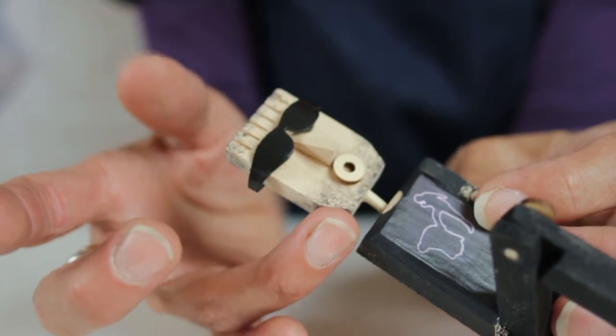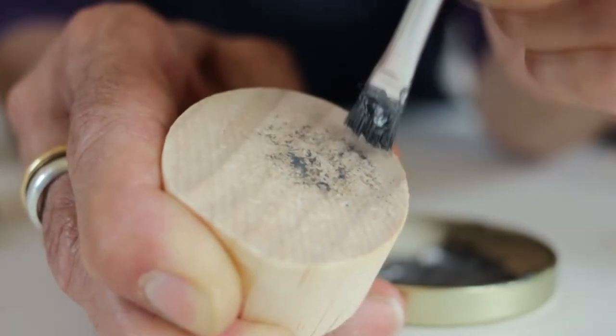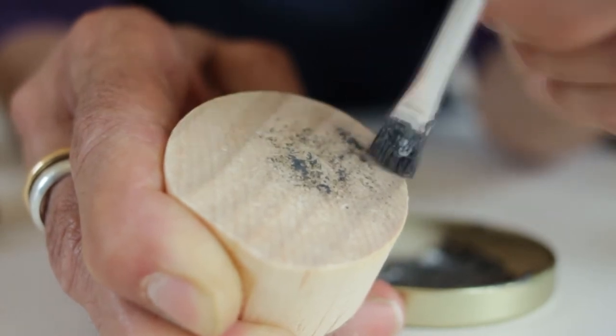The stubbly hair and beard I did with a dry brush with a little paint on and then just gently stippled it. Always test on a spare bit of wood or paper first.